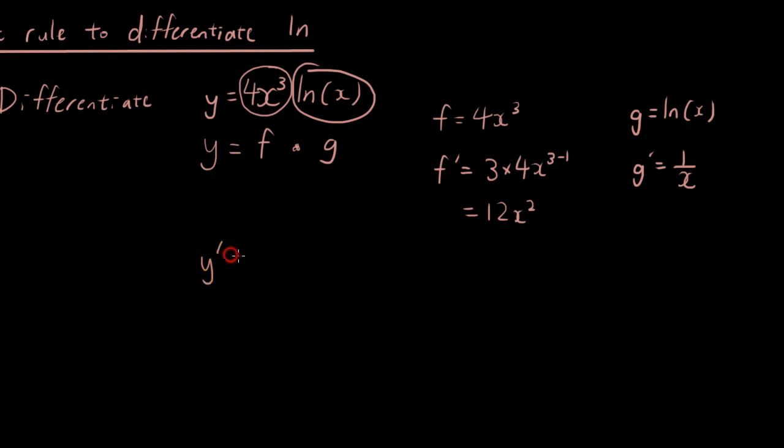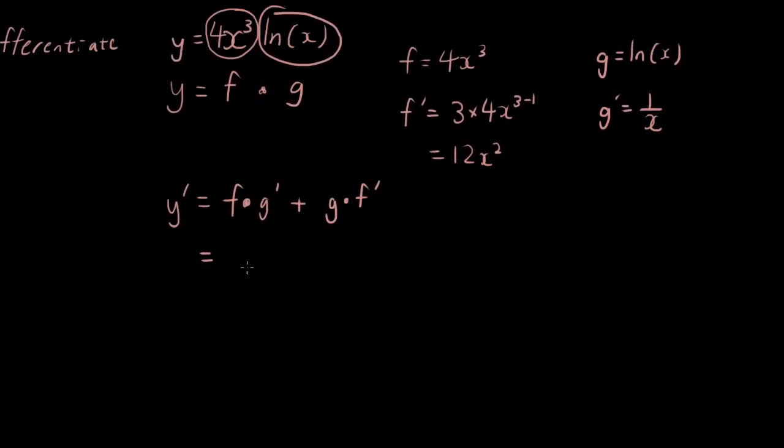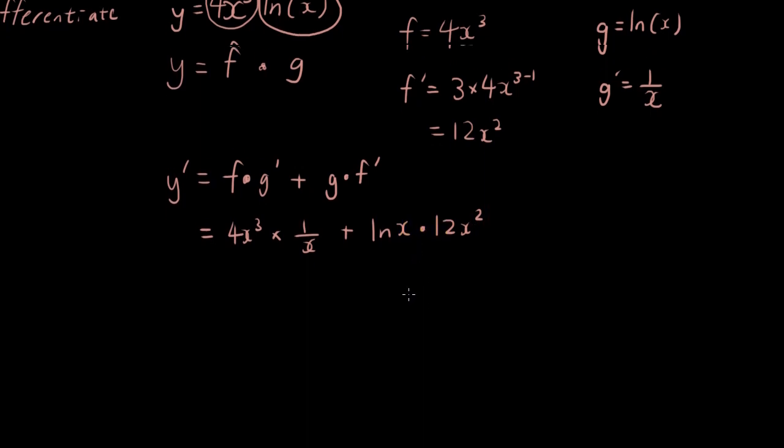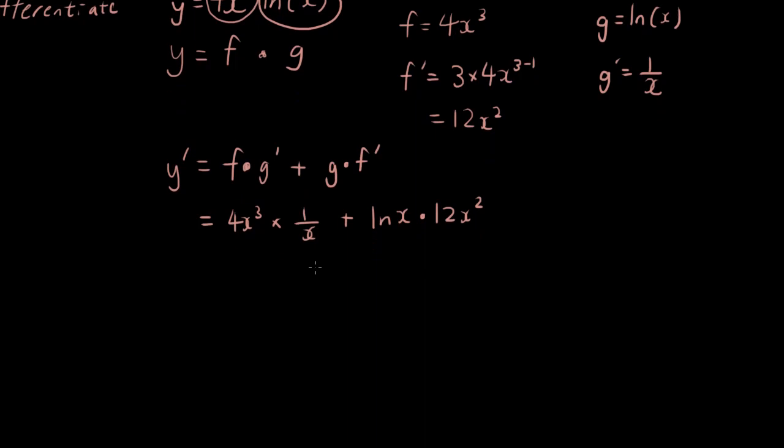So now let's try and put that back into the product rule. So we have y dash equals f times g dash plus g times f dash. That's the product rule. So let's try and put all that in. 4x cubed times 1 over x plus ln x times 12 x squared. So that's times as well, the little dot.